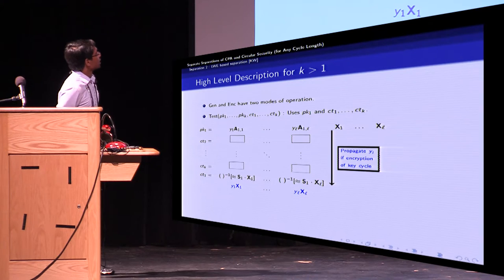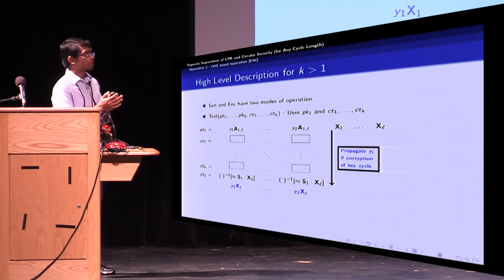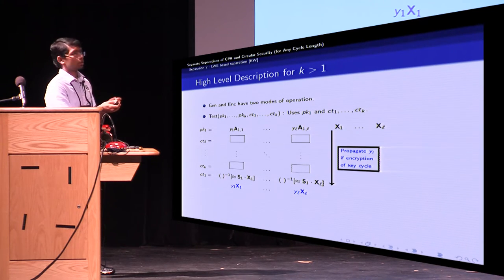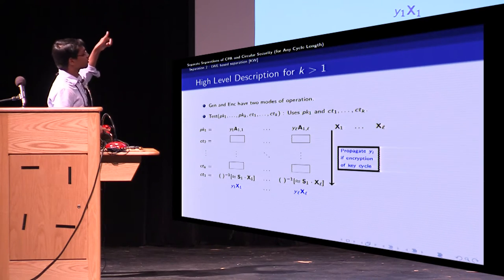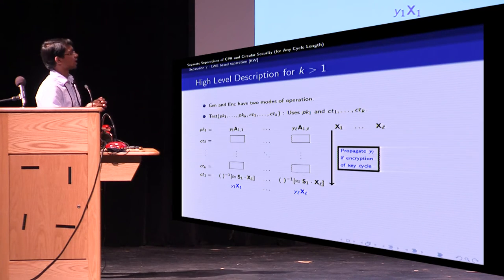So if these form encryptions of the secret key, then if you combine each column, then at the bottom you get some matrix times Y_i times X_i. So actually, the main action is happening only with the first public key and the first ciphertext. The other ciphertexts are merely propagating the Y_i values.